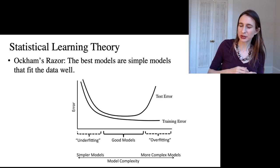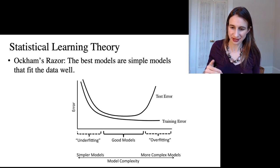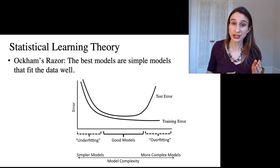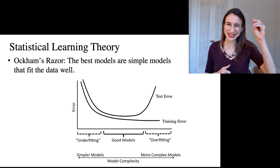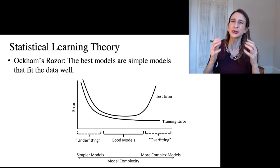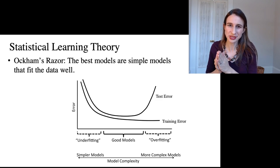Overfitting is when we've essentially memorized the training set and we can't generalize to the test set. So on the overfitting side, that's where the training error is very low but the test error is very high because we couldn't generalize. The model class was too complex. And then on the other extreme, we have models that are too simple.